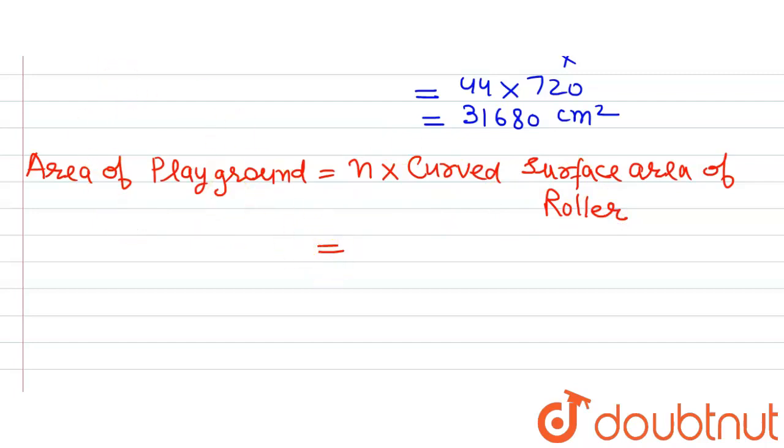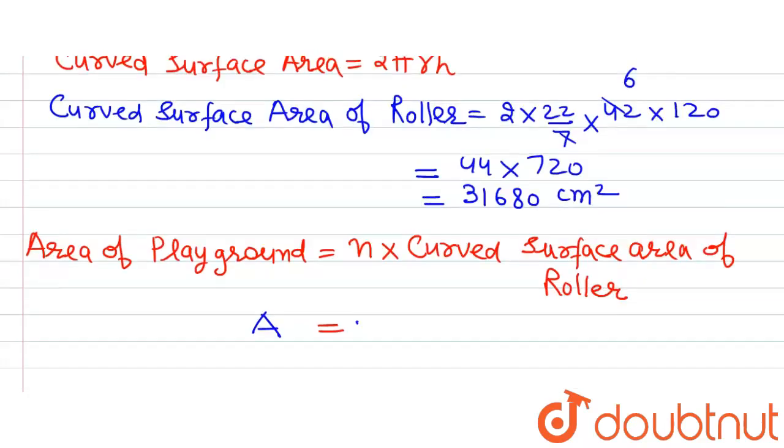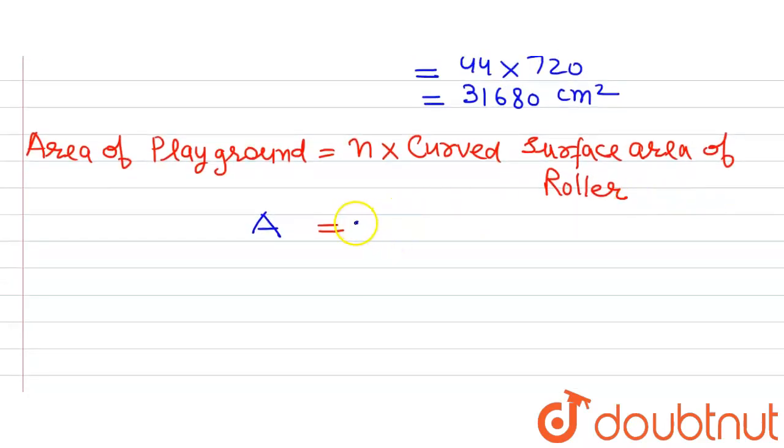We have area of playground, let's denote it by A, equal to n, which is 500, so 500 multiplied by the curved surface area of the roller.